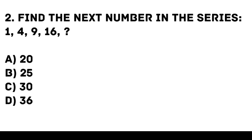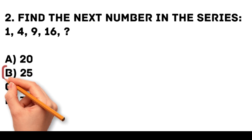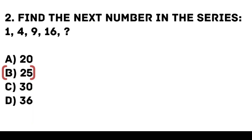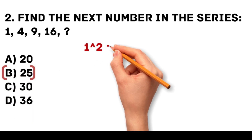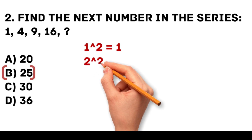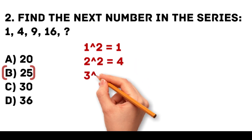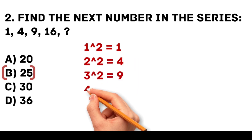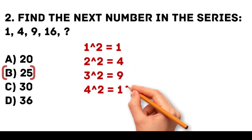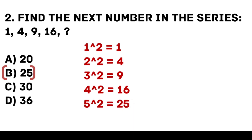Answer: B. 25. The series represents the squares of natural numbers. 1 squared equals 1. 2 squared equals 4. 3 squared equals 9. 4 squared equals 16. 5 squared equals 25.